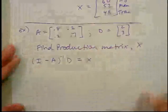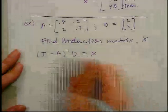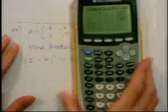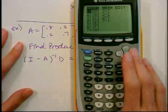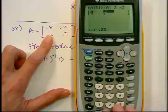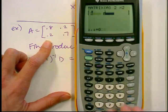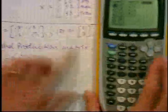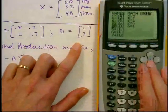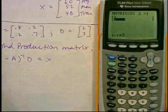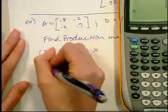The formula says to take (I minus A) inverse times D. This is a nice application of what we've learned in this chapter. I go to second matrix, edit, choose A, set it to two by two, and enter the values: 0.2, 0.8, 0.2, 0.2, and 0.7. Then I edit matrix D as a two by one matrix with entries 2 and 3.